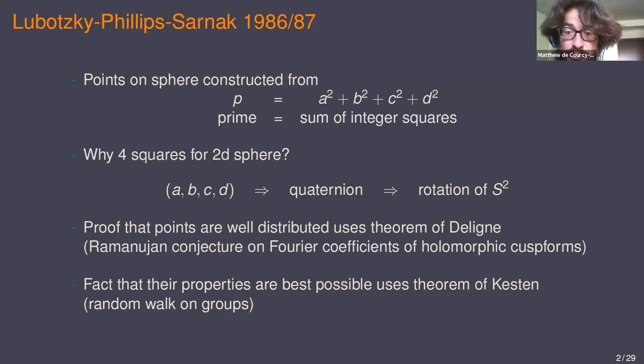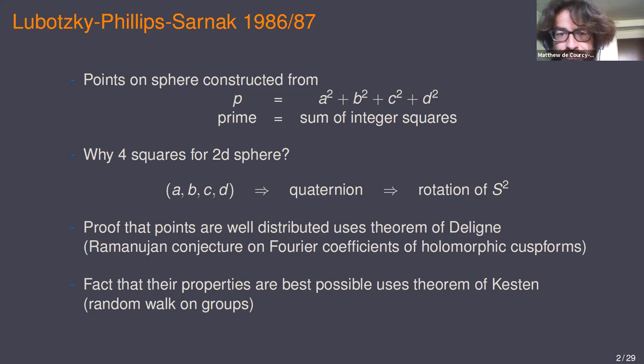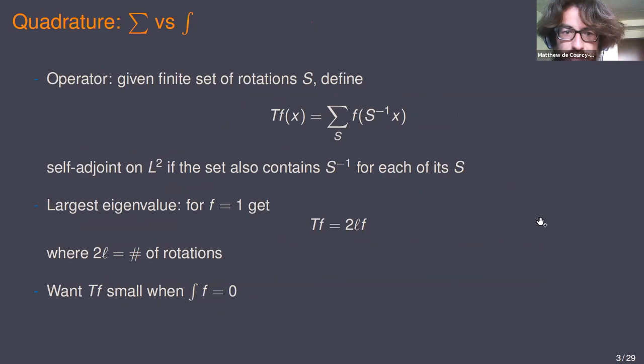The proof that those points are well distributed uses some serious input: the Ramanujan conjecture proved by Deligne. And the fact that their properties are best possible relies on another input, a theorem of Kesten concerning random walks on groups. So I'll indicate only very briefly how those inputs come into play. Please ask any questions you have along the way. I can't see the chat right now, but I can hear you.